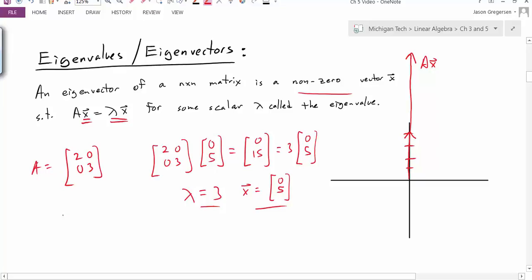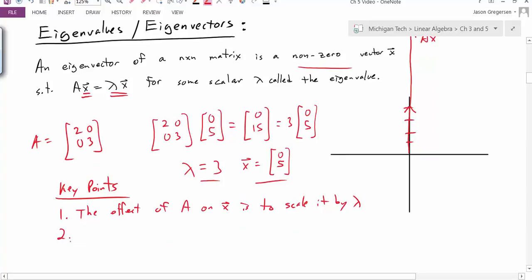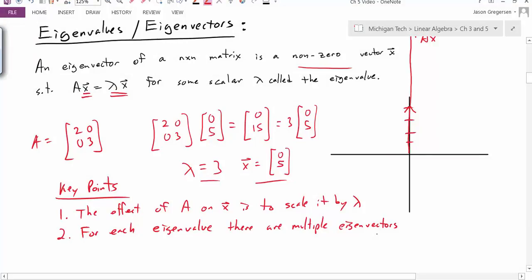So we have two key points. The first key point is that the effect of multiplying by the matrix A on our eigenvector is to just scale it by the value of lambda. The second key point is that for each eigenvalue, we can have multiple eigenvectors and we will always have that.